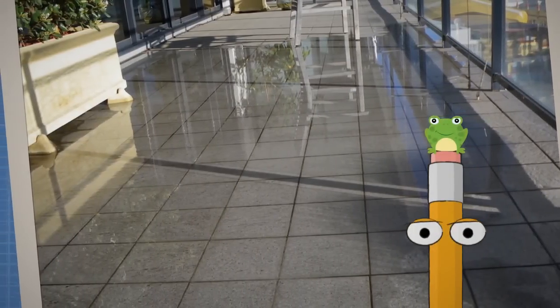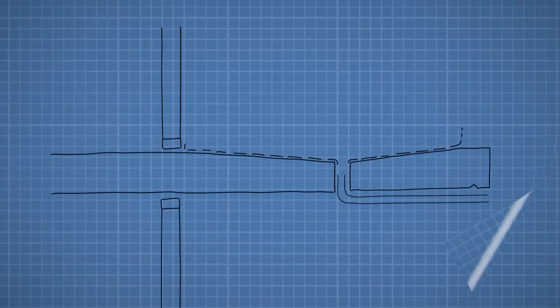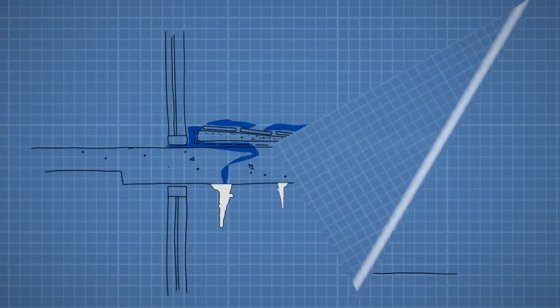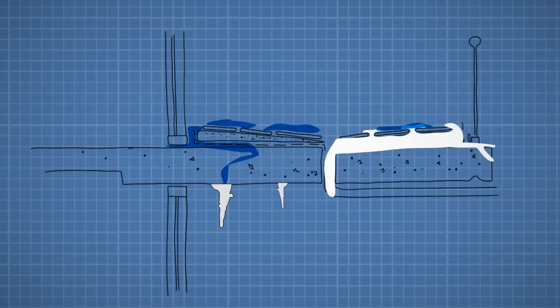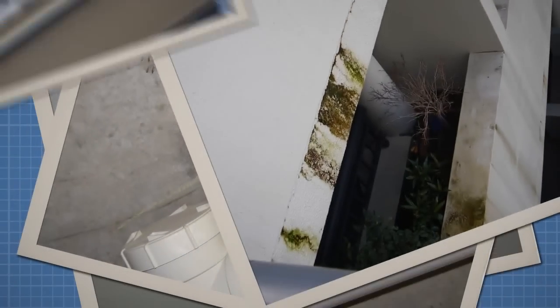So there you have it: the ideal design being compromised over the course of the construction process with disastrous results. It's scary to think that many buildings don't even have the correct design to begin with. It is these practices that have led to an epidemic of balcony leaching and leaking problems.